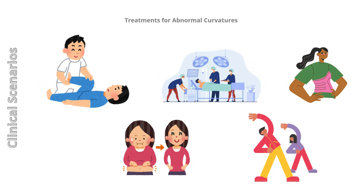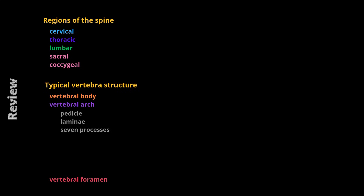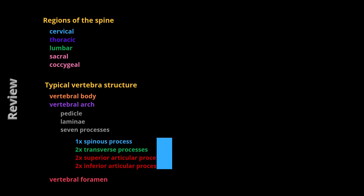Let's take some time to review what we've learned today. We began with a general overview of the regions of the spine, exploring the general structure of the cervical, thoracic, lumbar, sacral, and coccygeal regions. We then examined the structural features of a typical vertebra, which include the vertebral body, vertebral arch, and vertebral foramen. We also identified the components of the vertebral arch, including the pedicle, laminae, and seven processes — the spinous process, the two transverse processes, the two superior articular processes, and the two inferior articular processes.